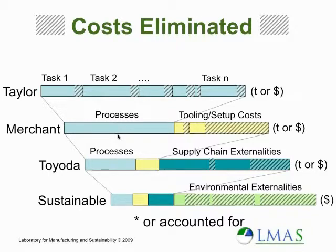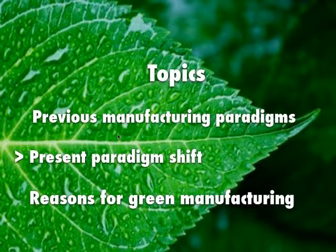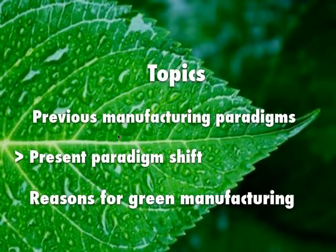The last connection is to remove the environmental externalities, which allows us to account for reduced costs due to what is currently the social burden of doing this, but is becoming more and more the manufacturer's burden. At the same time, reducing waste, reducing energy use, reducing impacts and requirements to handle the results of our manufacturing process — which goes right to the bottom line. The idea is to now move along and figure out what this present paradigm shift means in terms of green or sustainable manufacturing.